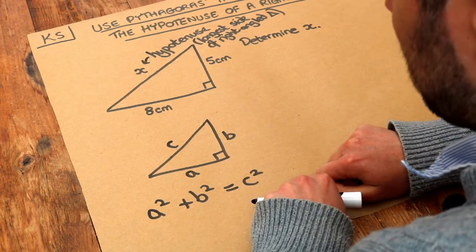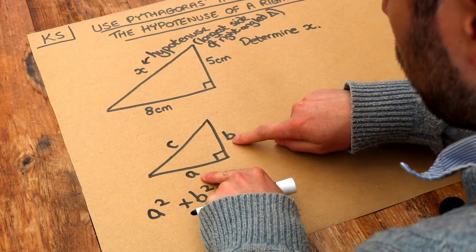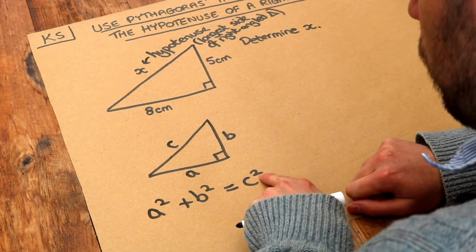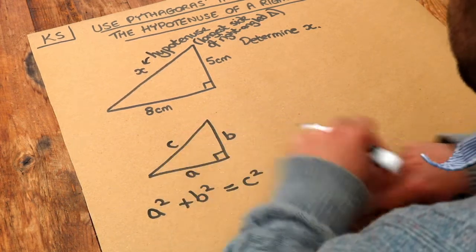And in words that's basically saying that if we square each of the shorter sides of a right angle triangle and then add them together, then we get the square of the longest side, the hypotenuse of the triangle.